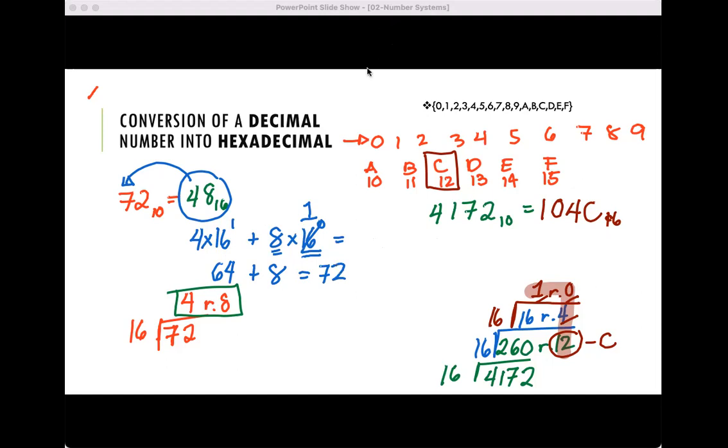Same goes with this one. What if we want to convert it back? Let's just write the value. Remember our C is 12, then 4, 0, and 1. So I will multiply this by 16.